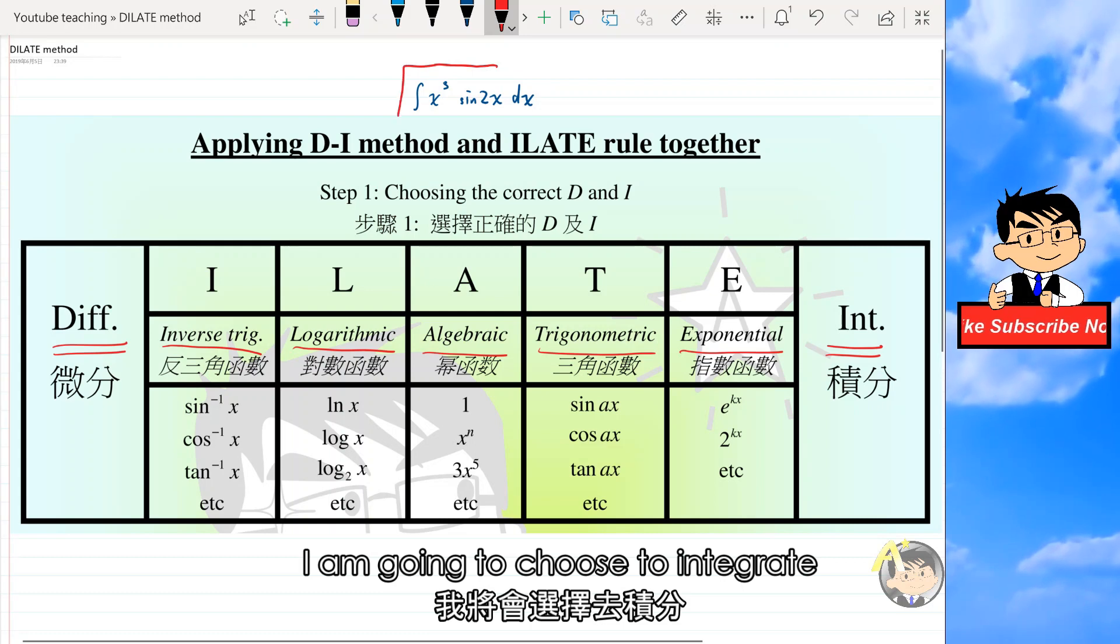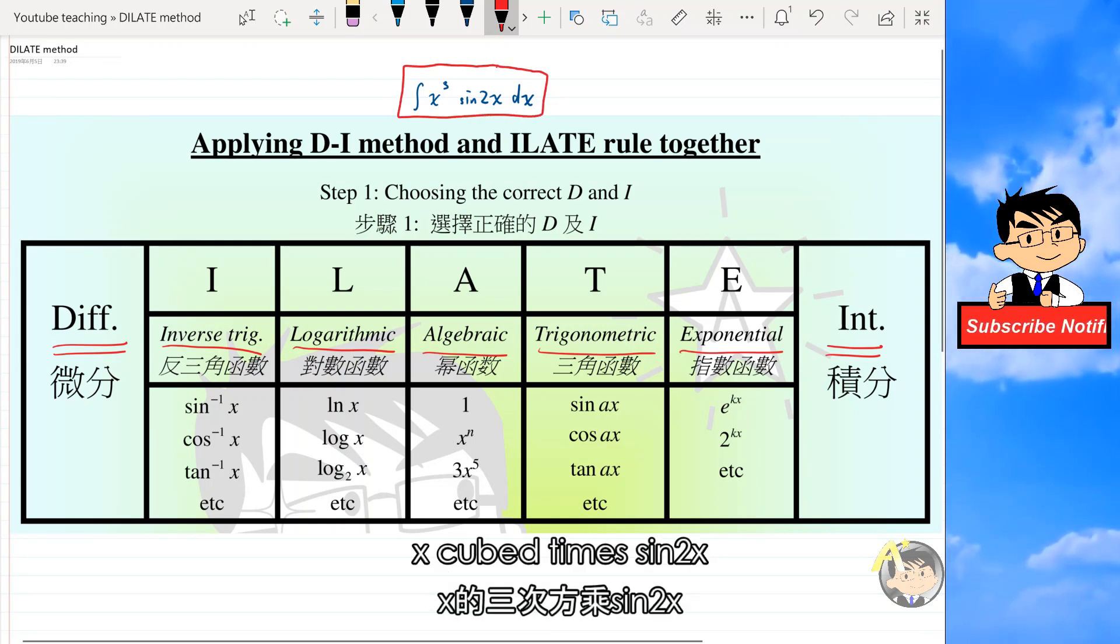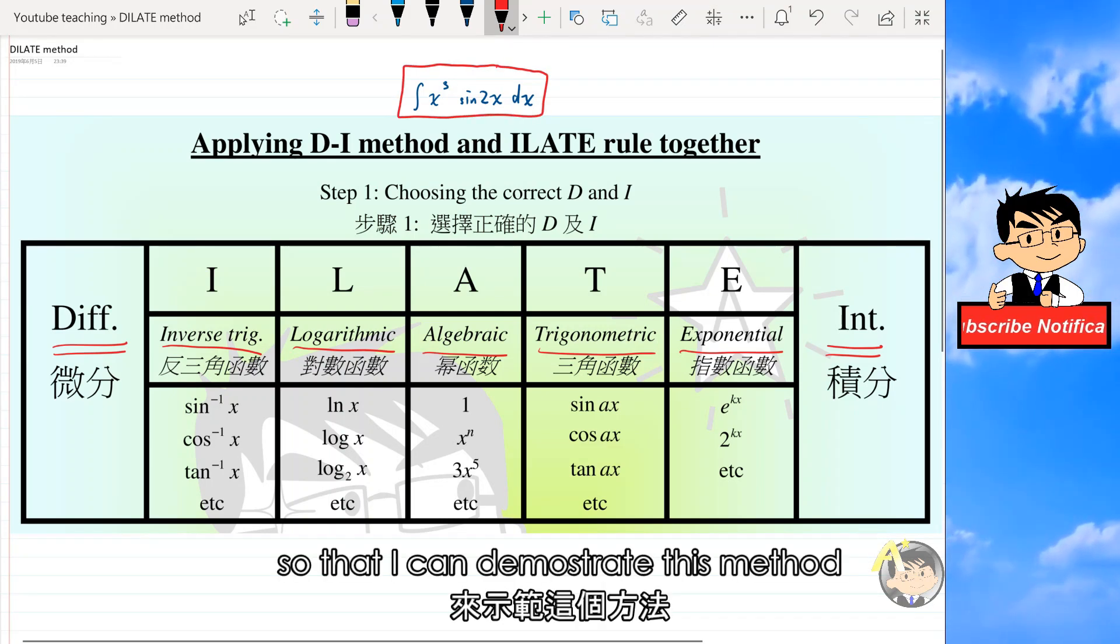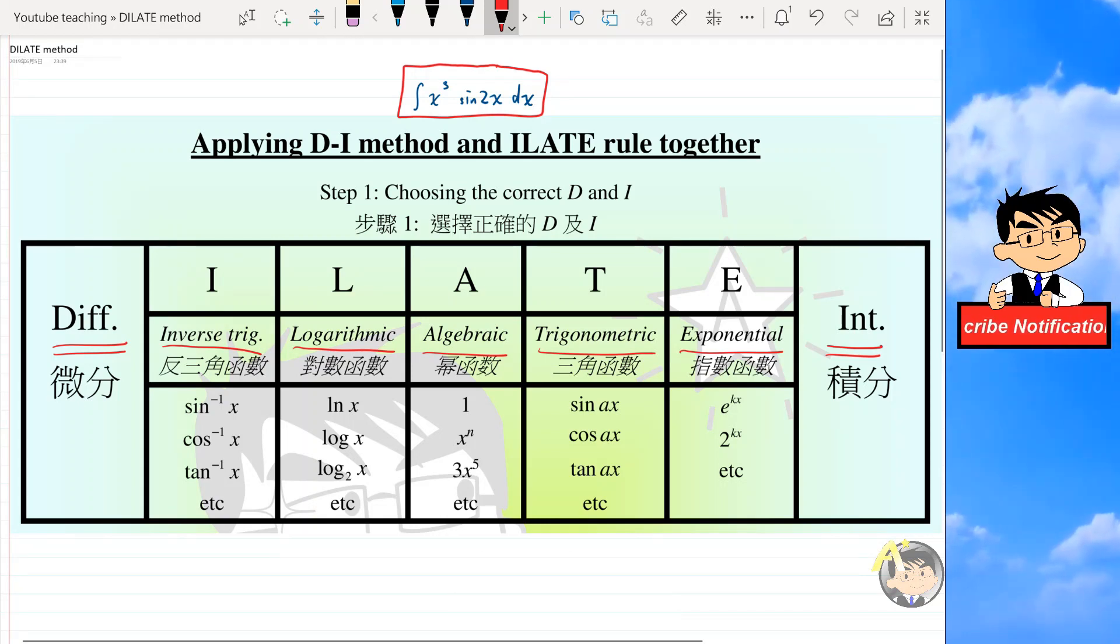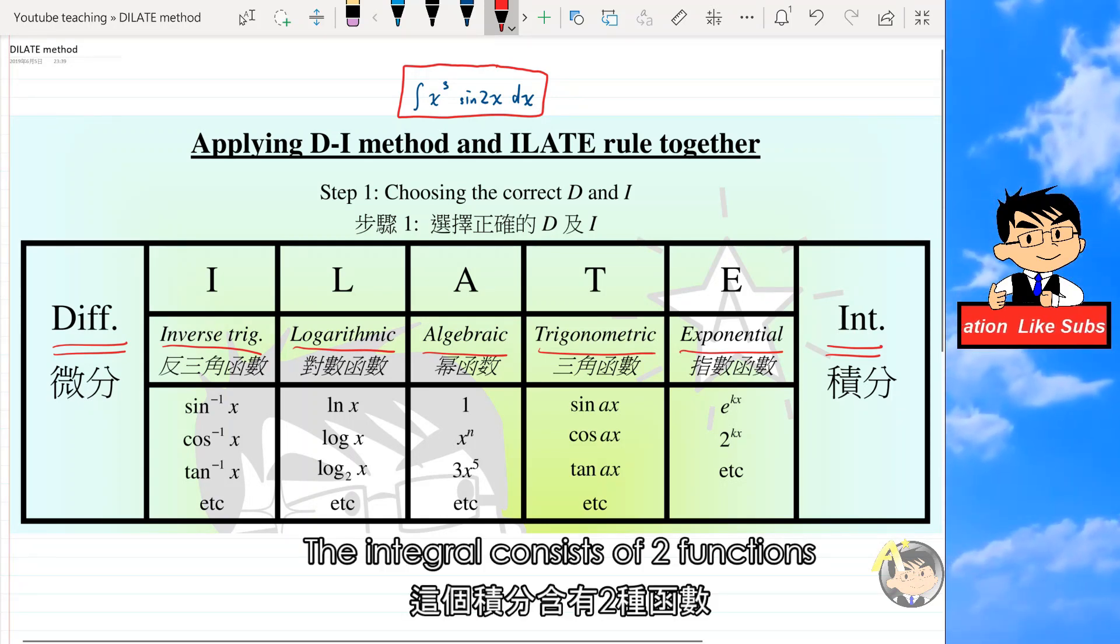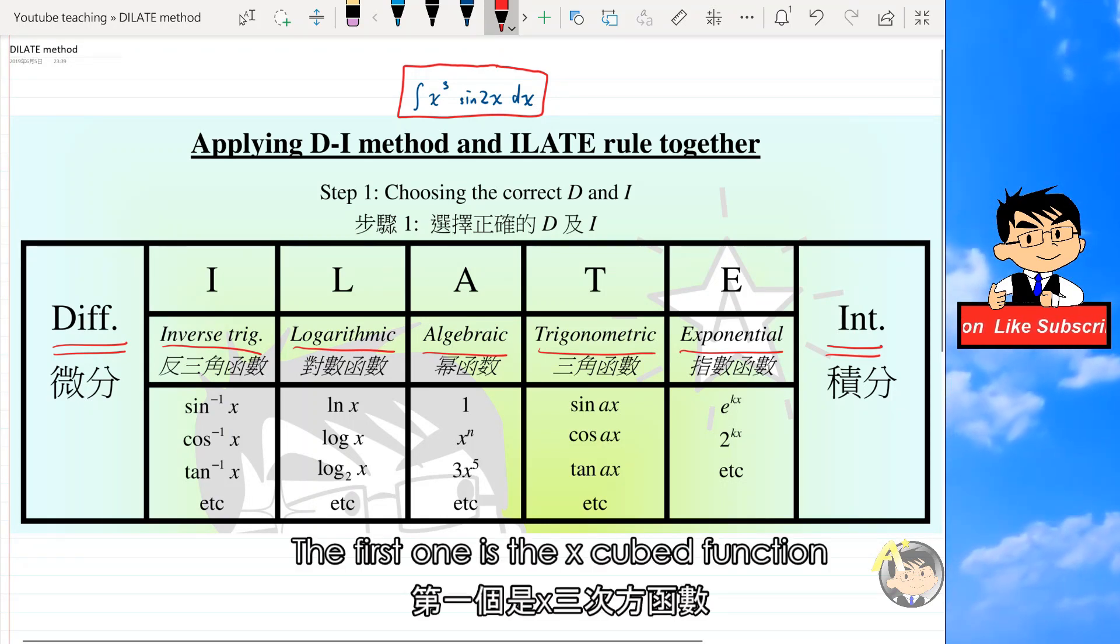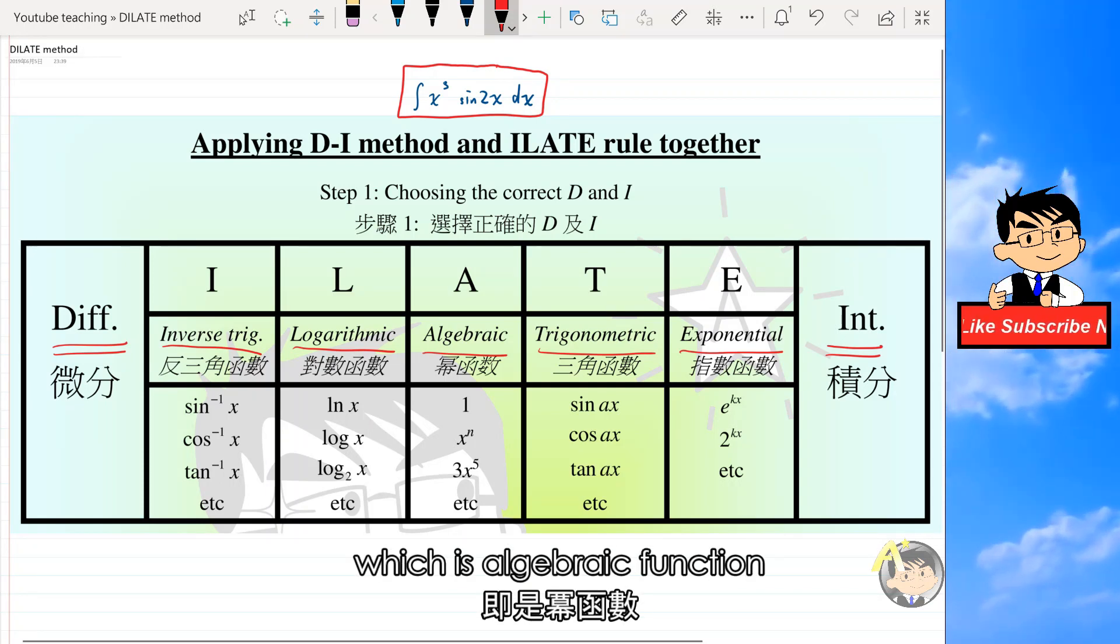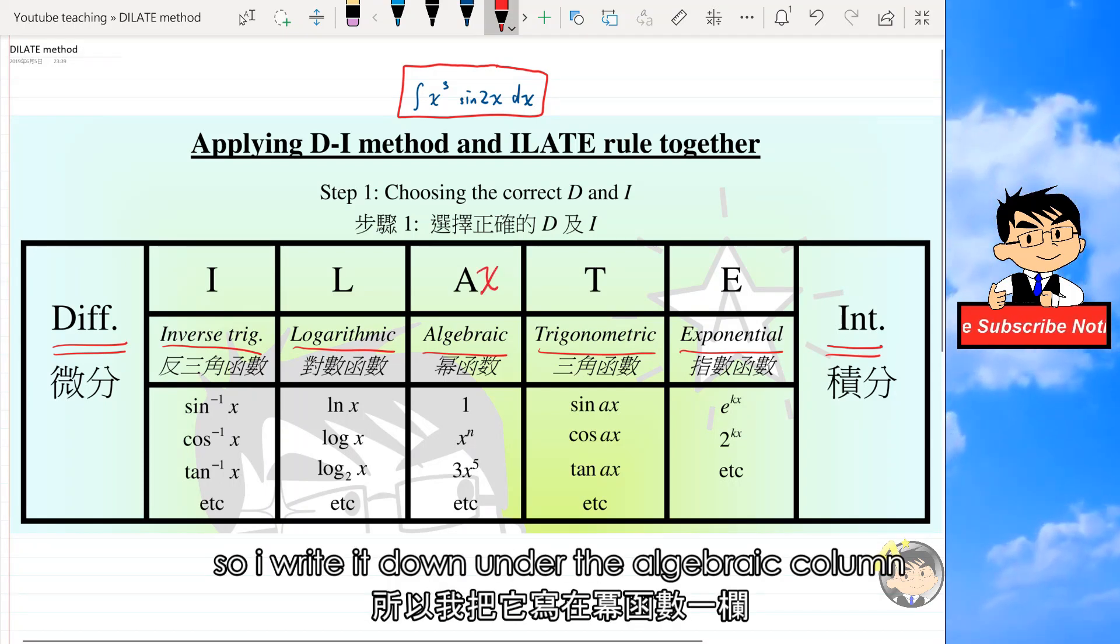I'm going to choose to integrate x cubed times sine 2x so that I can demonstrate this method. The integral consists of two functions. The first one is the x cubed function which is an algebraic function, so I write it down under the algebraic column.